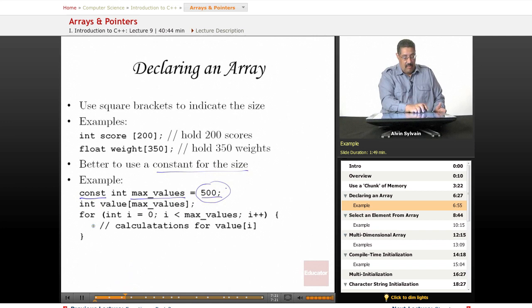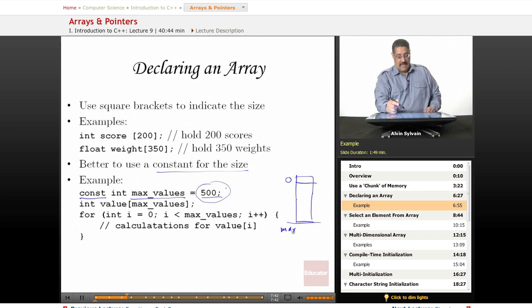So here we have the value is declared to have max_values number of slots, which will be 500 slots. Then we want to do some calculations for each value inside this array. Our loop is from 0, which is the first slot, until we're less than the max slot, because the actual max slot goes past. And then we i plus plus.